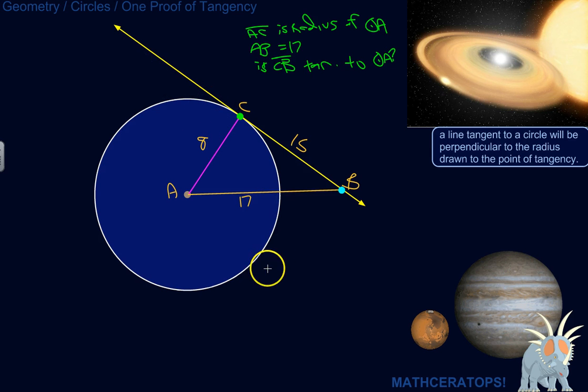So if we can prove that 8 squared plus 15 squared is equal to 17 squared, then indeed triangle ACB would be a right triangle. And that would show that this line is, in fact, tangent to circle A.